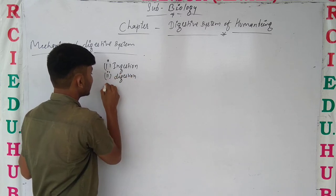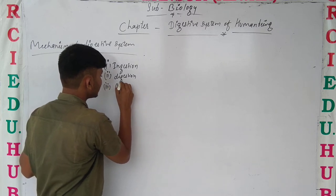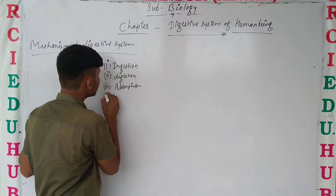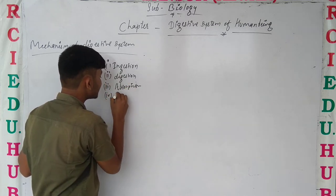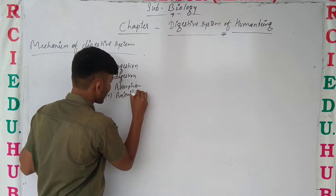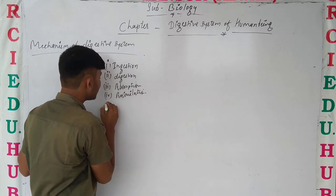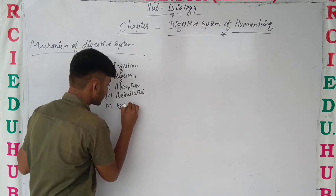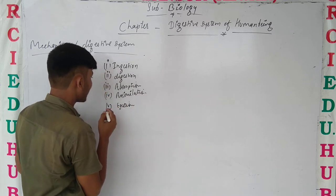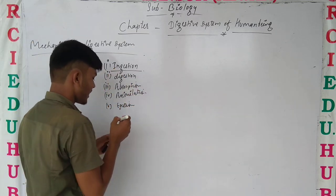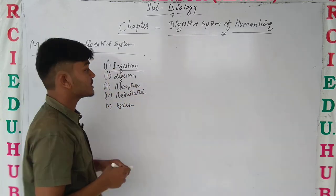The fourth step is absorption. The fourth step is assimilation. And the fifth step is ingestion. So first of all we will talk about ingestion — what is ingestion. We have talked about the digestive system, and we are going to talk about the digestive system.